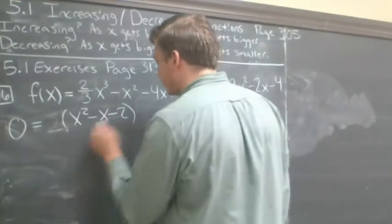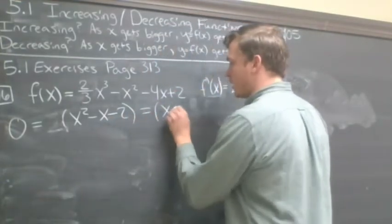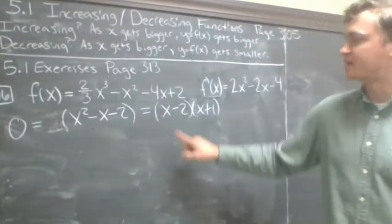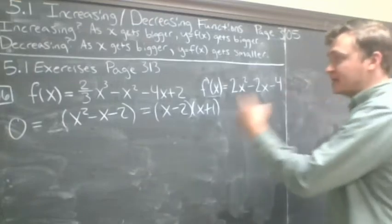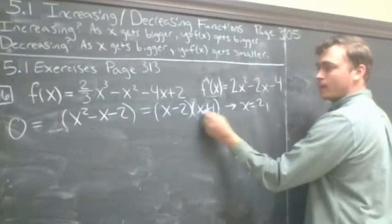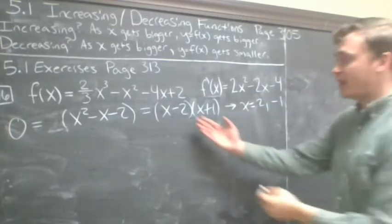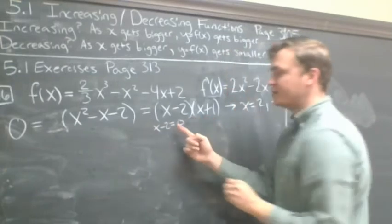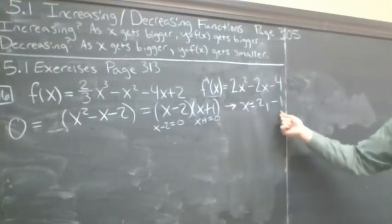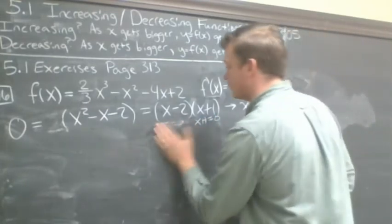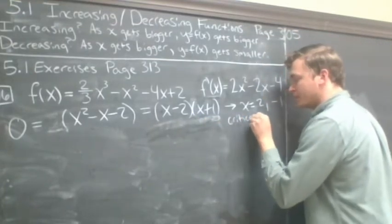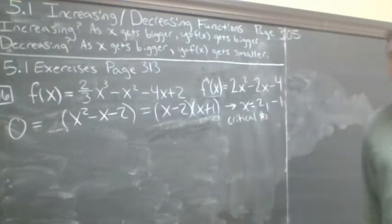Setting equal to zero: 0 = x² − x − 2. This trinomial factors into (x − 2)(x + 1). Setting each factor equal to zero: x − 2 = 0 gives x = 2, and x + 1 = 0 gives x = −1. We have two critical numbers: x = 2 and x = −1. Interesting — our derivative was linear last time giving one critical number, but now our derivative is quadratic giving two.